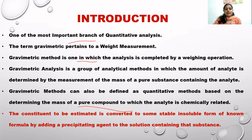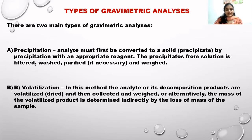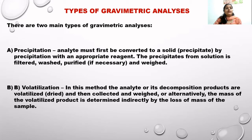The constituent to be estimated is converted to some stable, insoluble form of known formula by adding a precipitating agent to the solution containing that substance. There are two main types of gravimetric analysis: precipitation and volatilization. In precipitation, we make a direct measurement of the element to be estimated by measuring the weight of the precipitate formed. In volatilization, which is the indirect method, we convert something to a volatile compound, remove it by heating, and calculate the mass loss.